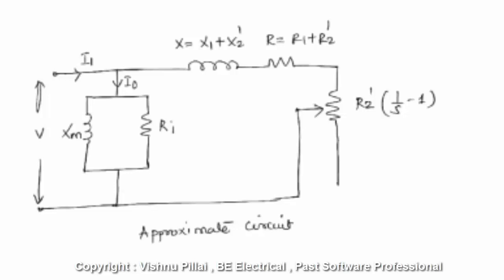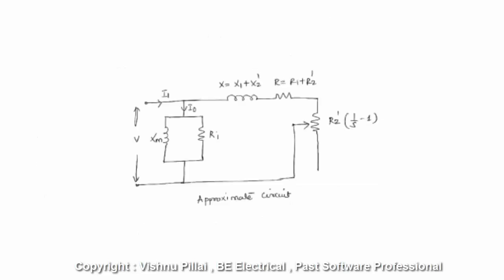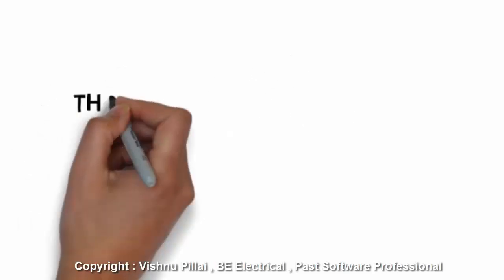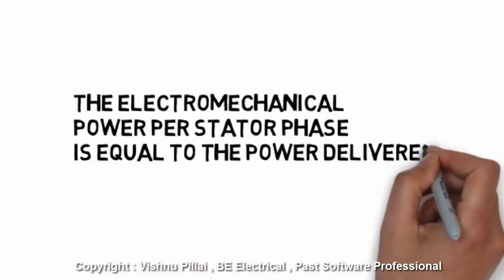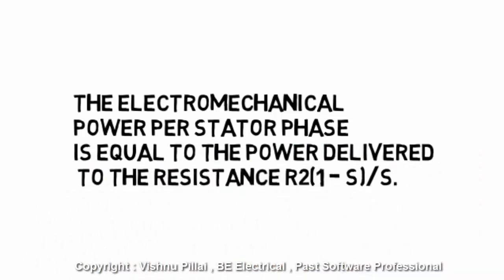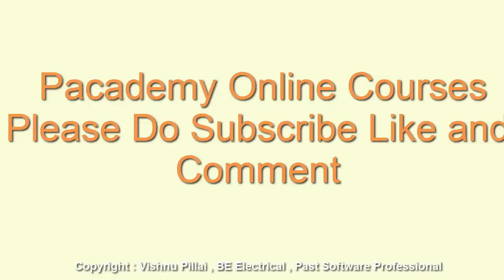The rotor resistance can be written as R2(1 - S)/S, which is equivalent to the mechanical power output developed by the rotor. The electromechanical power per stator phase equals the power developed in the resistance R2(1 - S)/S, which represents the total mechanical power developed by the rotor. A detailed derivation of this power expression will be covered in lecture 7 of this series.